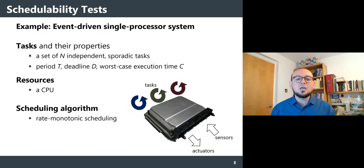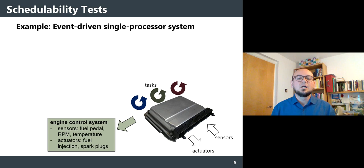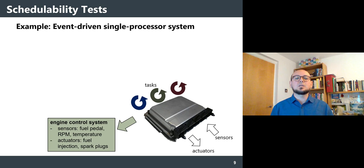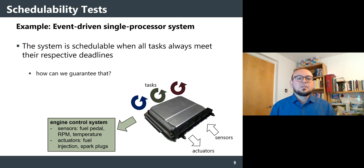An example of such a system is an engine control system, like the one in the figure, where sensors measure the fuel paddle position, RPM, and temperature, and actuators control fuel injection volume and spark plug activation timing. Such systems are commonly implemented as single processor systems, as shown by an actual engine control system from an automotive vendor we have worked with. The system is considered schedulable when all tasks always meet their respective deadlines, even in the worst case.